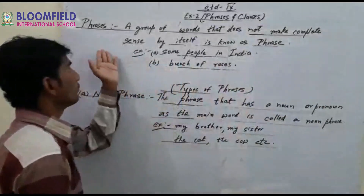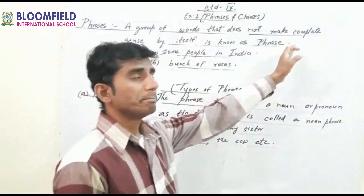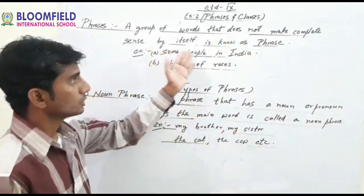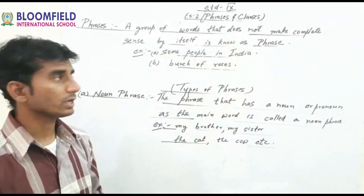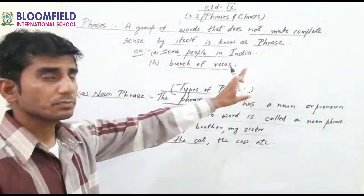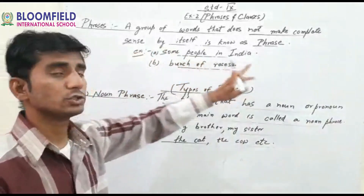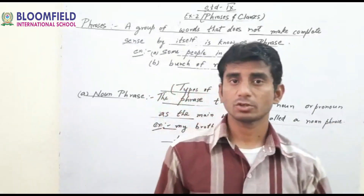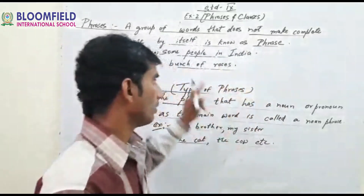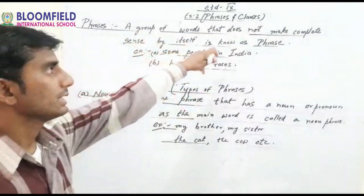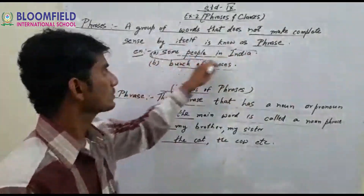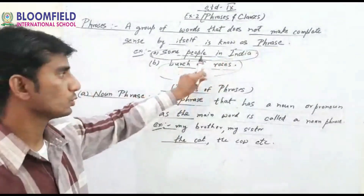Now, phrases: a group of words that does not make complete sense by itself is known as a phrase. For example, 'some people in India' — to complete the sense, more words are needed. Second example: 'bunch of roses' — but it is not completing the sense at all, so it requires more words. These are examples of phrases: a group of words that does not make complete sense by itself.